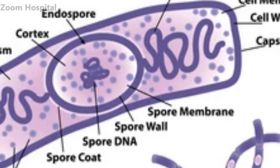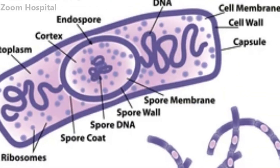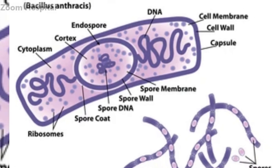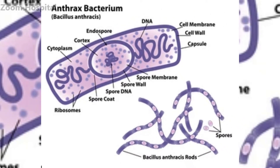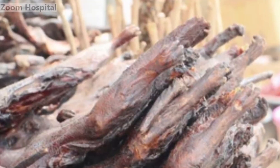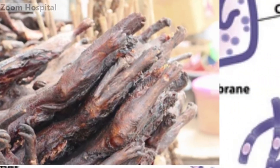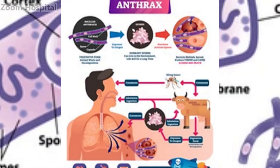Anthrax is caused by the spore-forming bacterium known as Bacillus anthracis. These resilient spores can survive in harsh environments for long periods, making them a persistent threat. While anthrax is typically associated with herbivores like cattle and sheep, humans can also contract the disease through direct contact with infected animals or contaminated animal products.